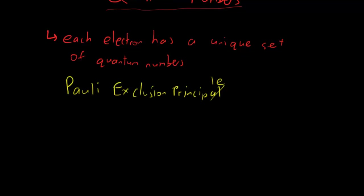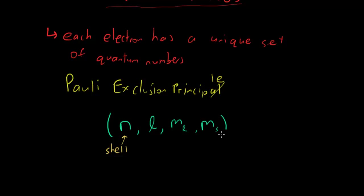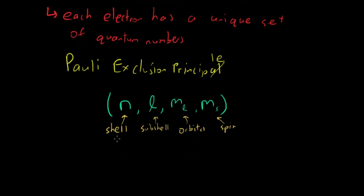Quantum numbers come in a set of four numbers, and they are generally in this form. The first one is your shell, denoted by n. Your next one is your subshell, which is L. Then you have your orbitals, which is M sub L. And you have your spin, which is M sub S — my favorite, because it's the simplest.